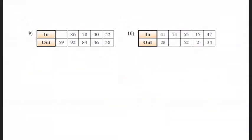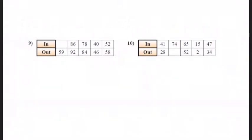Okay, so the next one, the inbox for number 9 is 53. And the rule is add 6. The out box here is 61. And the rule is subtract 13.